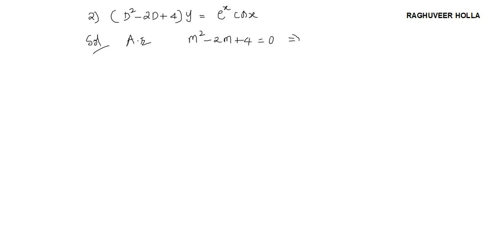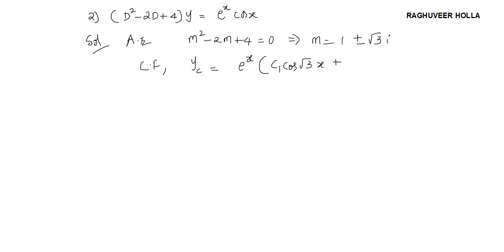Since it is a quadratic equation, we will have two solutions. To find them: m is equal to 1 plus or minus root 3i. So the complementary function, that is yc, is e to the power of x times (c1·cos root 3 into x, plus c2·sin root 3 into x). This is the complementary function.